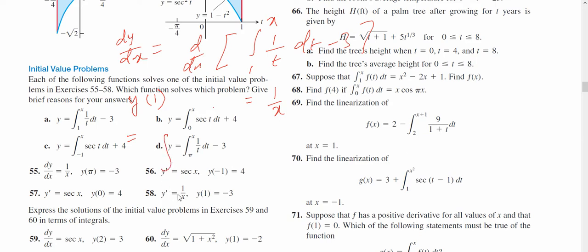So we have y(1) is equal to, we are dealing with part a, so replace x by 1: integral from 1 to 1 of 1 over t dt minus 3. The definite integral from a to a of some function is 0. So this is 0 minus 3, and the answer is minus 3.